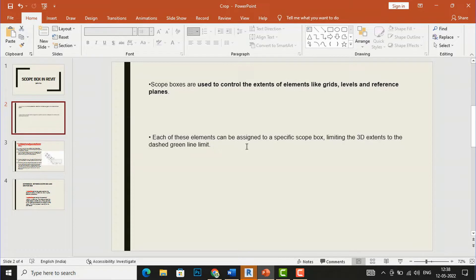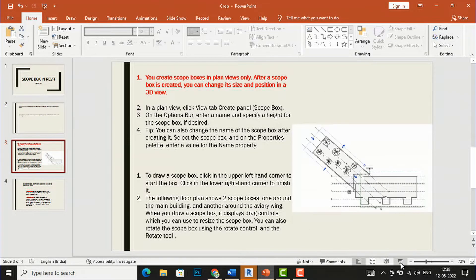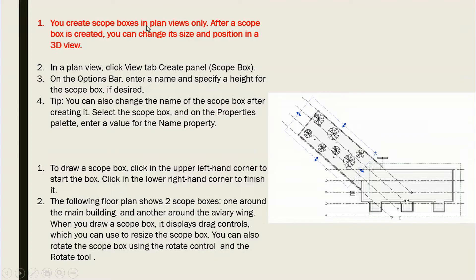Each of these elements can be assigned to a specific scope box, limiting the 3D extents to the dashed green line limit. So if you are drawing in a residential or any project and you draw scope boxes in a plan view — suppose the front part — that part only will be visible in 3D view if you turn on the scope box in the properties palette. You can create scope boxes in a plan view only; after a scope box is created you can change its size and position in 3D view.